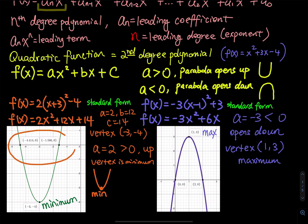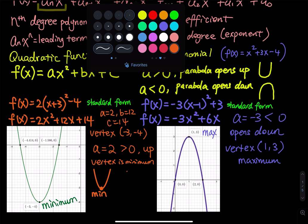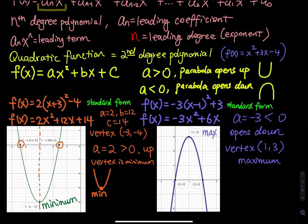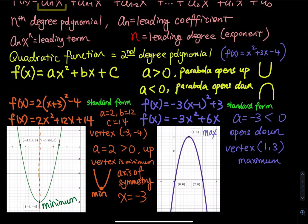Do you see the two points on the x-axis? Those points are the x-intercepts, or you can call them the zeros of the quadratic function. We can also identify the axis of symmetry. The axis of symmetry is the vertical line where, if you fold the parabola along it, the two sides touch. The axis of symmetry is x equals negative 3 — you just take the x-coordinate of the vertex.